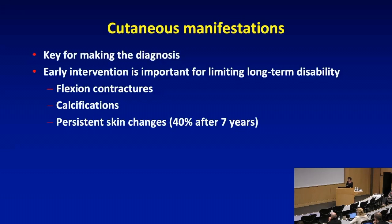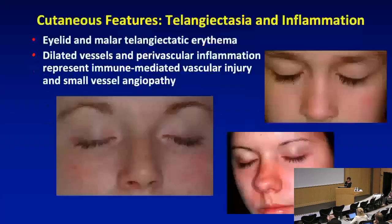Early intervention, as you've already heard from Dr. Prockman's talk this morning, is very important for limiting long-term disability, particularly when we're talking about flexion contractures, calcifications, and these persistent skin changes, which in one study seven years out were present in 40% of patients. So despite intervention that can be successful, the skin lesions remain.